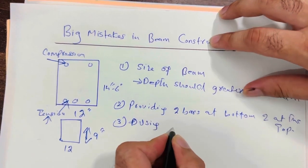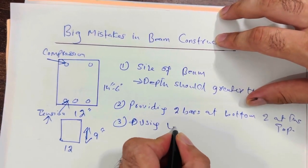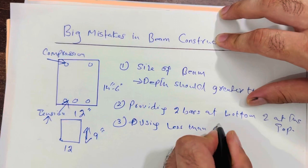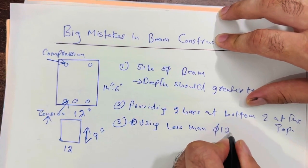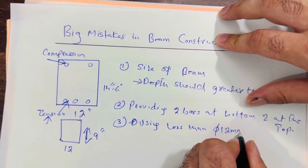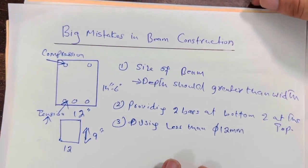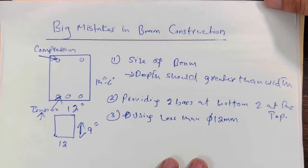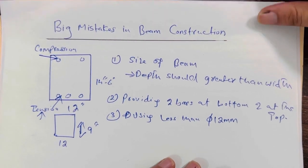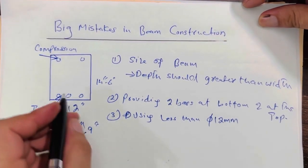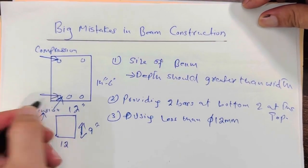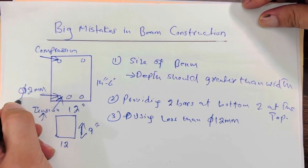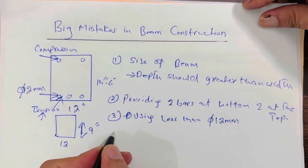Another big mistake is using less than 12 millimeter diameter steel rods. For example, if you are using 10 millimeter diameter steel rods, that is a big mistake. Use a minimum of 12 millimeter diameter.